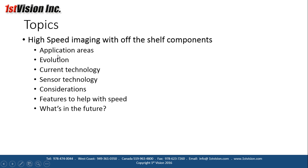We'll go over several different areas here: application areas, evolution of the technology from CCD to CMOS, current sensors and what that technology involves, some considerations for high-speed imaging, features of the sensors and cameras that help with speed, and what's going on in the future regarding interfaces.